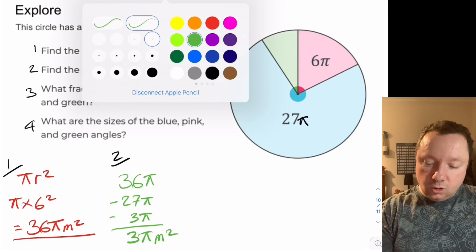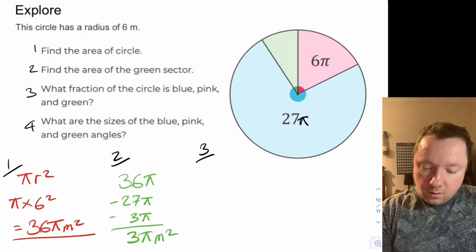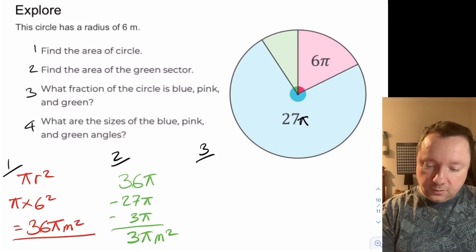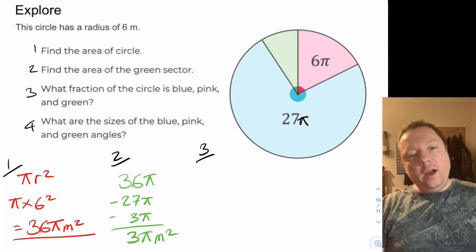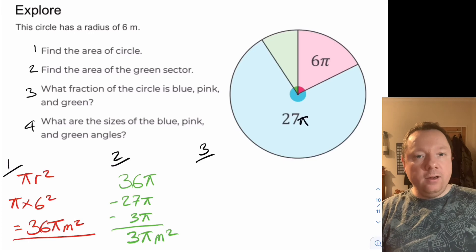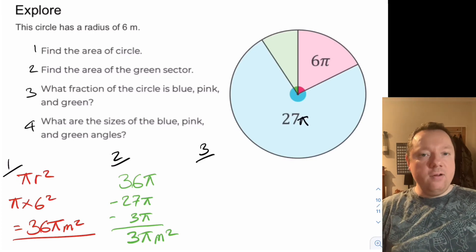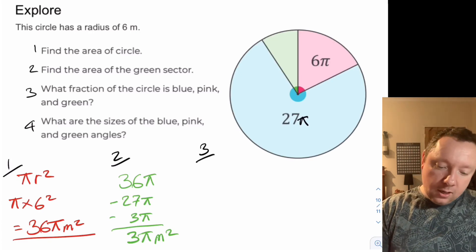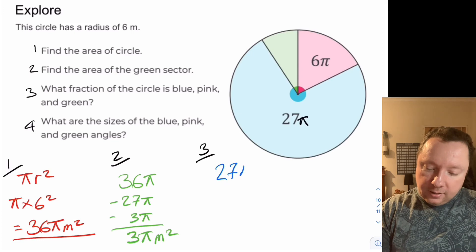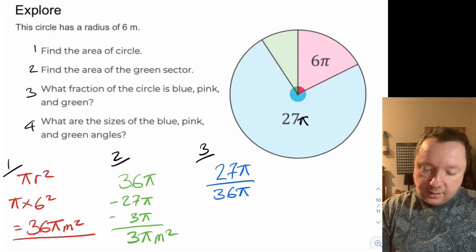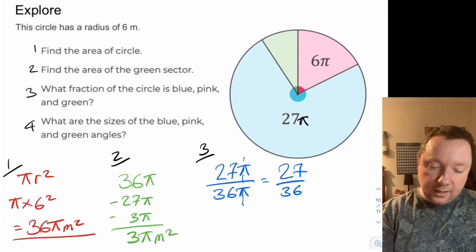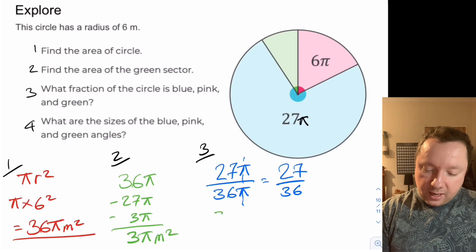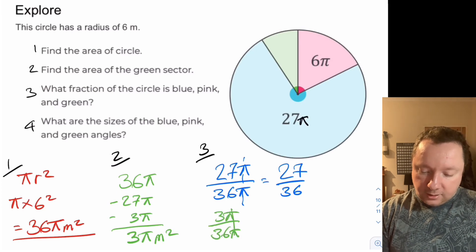Question three: what fraction is each section? If you know the whole area and the area of each bit, the fraction is just that area out of the total area — you can do angle over angle, area over area, or length over length. Blue is 27 pi out of 36 pi — the pi's cancel so it's 27 out of 36. The green section is 3 pi out of 36 pi — simplifies to 1 out of 12. The pink section is 6 pi out of 36 pi — simplifies to 6 out of 36, which is a sixth.